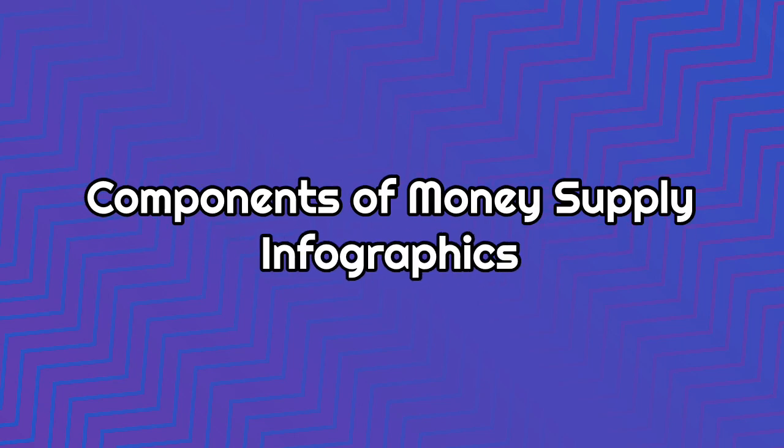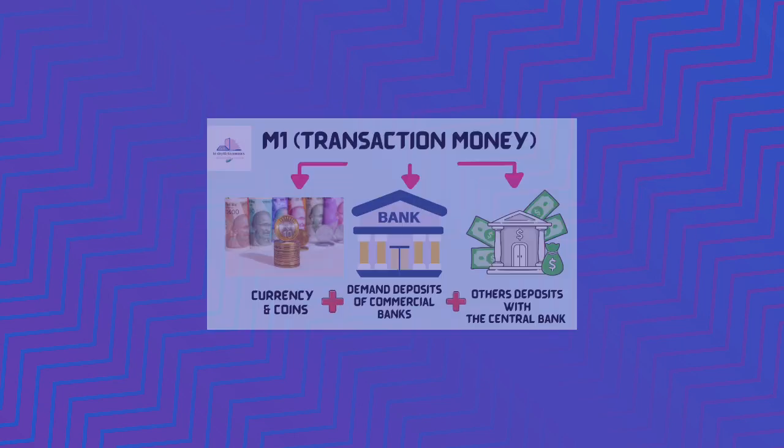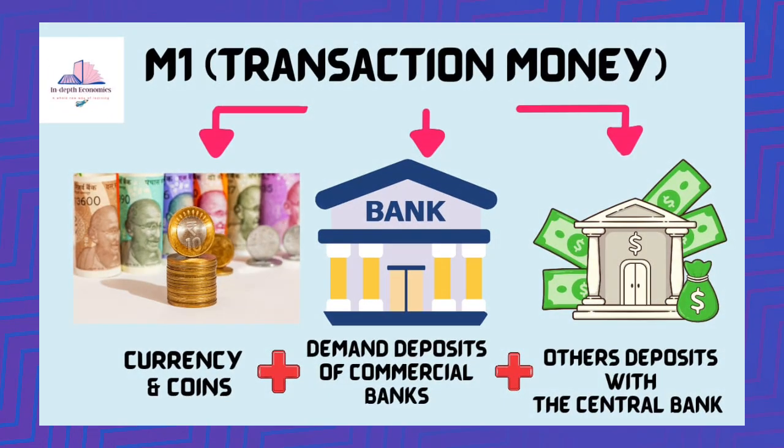Let us go into the details of each component using infographics. The first component of money supply is M1, also known as transaction money, because its components can be directly used to make transactions. M1 includes: first, coins and paper notes held by the public; second, demand deposits of the public with commercial banks; and third, other deposits held by the central bank on behalf of foreign governments and banks, the IMF, World Bank, and public financial institutions.